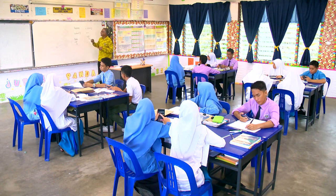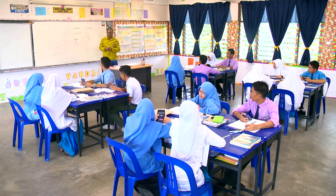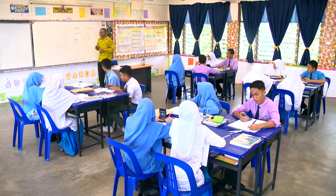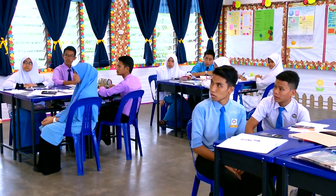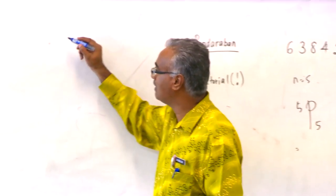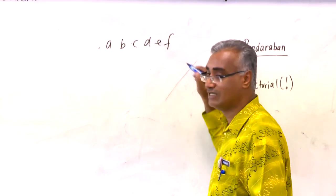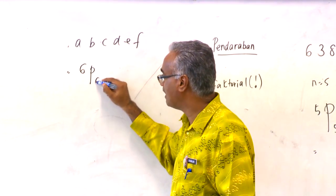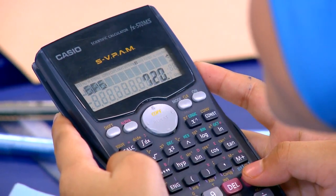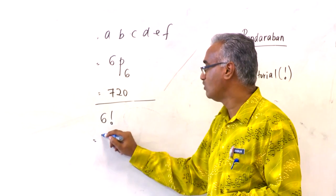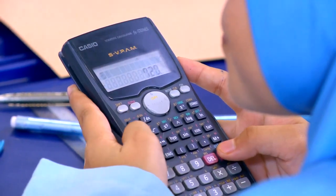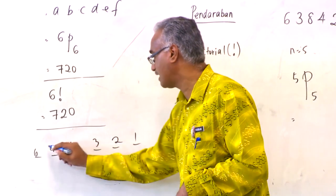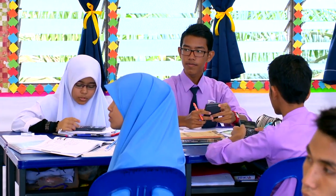Kita lebih berminat pada pendaraban dan faktorial, sebab dua cara ini lebih mudah untuk menyelesaikan soalan melibatkan pilih atur. Nanti minggu depan kita nak belajar menggunakan syarat — bila ada syarat, kalau akan menggunakan rumus, lebih susah. Contohnya, kita gunakan enam huruf A, B, C, D, E, F. Susun tanpa syarat: rumus 6P6 = 720; kaedah faktorial 6! = 720; kaedah petak 6 × 5 × 4 × 3 × 2 × 1 = 720.